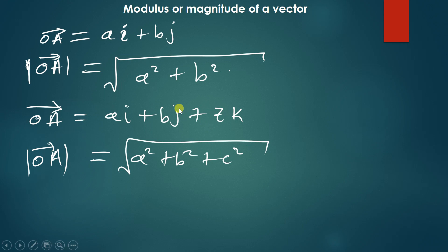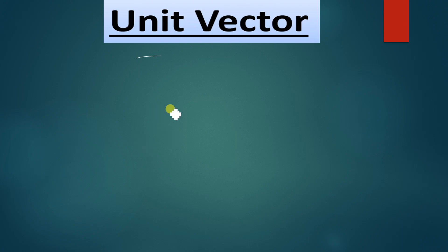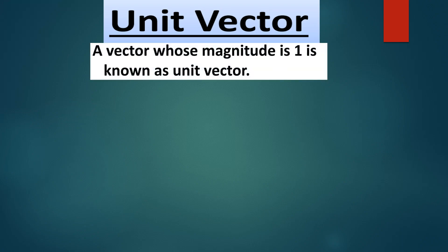There is one part of vectors which utilizes the magnitude throughout, and that is the unit vector. So what is a unit vector? A unit vector is simply a vector which has the magnitude equal to 1. So if you find the magnitude of a vector is equal to 1, that vector is known as the unit vector — the vector whose magnitude is equal to 1.